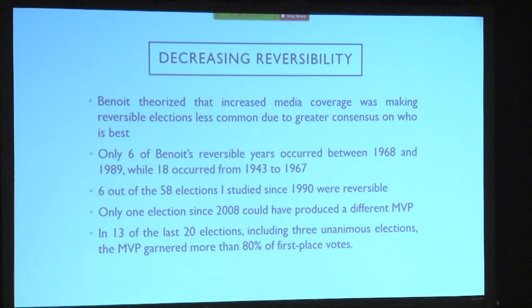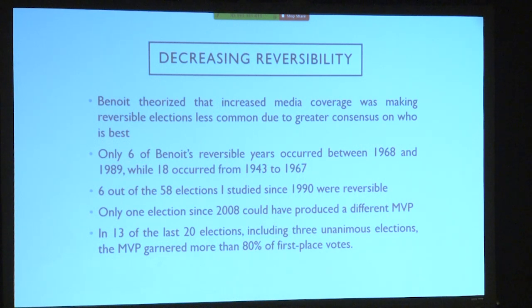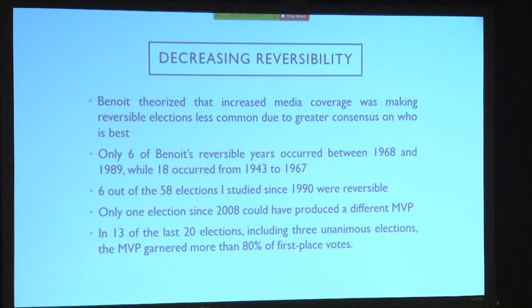Another impact is that the voters themselves are sports writers. Each city with a major league team gets to choose two sports writers to vote. In the 1940s these were newspaper writers covering the local team, but today the idea of a sports writer has changed a lot. In last year's election, Kansas City had no local newspapers represented — their two voters were from ESPN and Yahoo Sports, which are much more national outlets with smaller city loyalties. In 13 of the last 20 elections, including three unanimous elections, the MVP got more than 80% of first-place votes. So the voting still matters, but it's becoming a little more predictable.